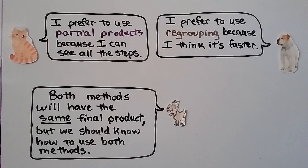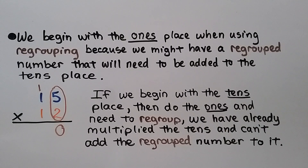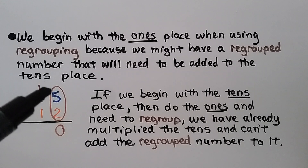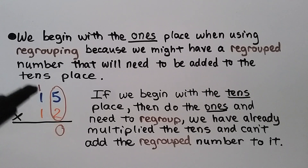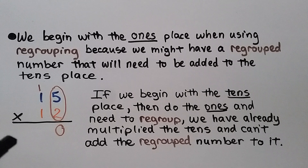We can use either method — partial products or regrouping — to find the product of two-digit factors. The cat prefers partial products because all the steps are visible. The dog prefers regrouping because it's faster. The goat reminds us both methods give the same final product, but we should know how to use both. We begin with the ones place when using regrouping because we might have a regrouped number that needs to be added to the tens place. If we start with the tens, we can't go back to add a later regrouped value.